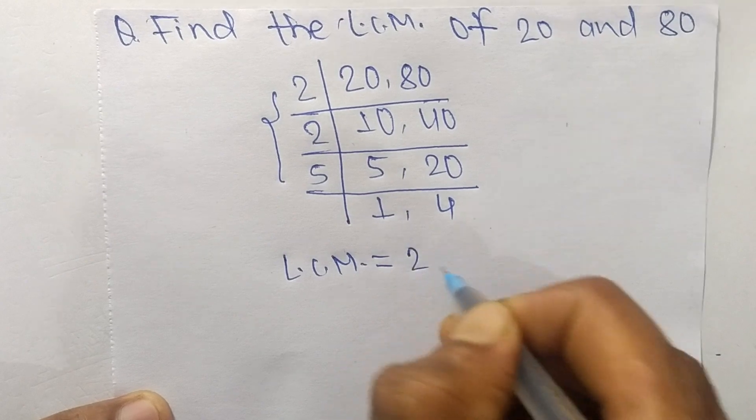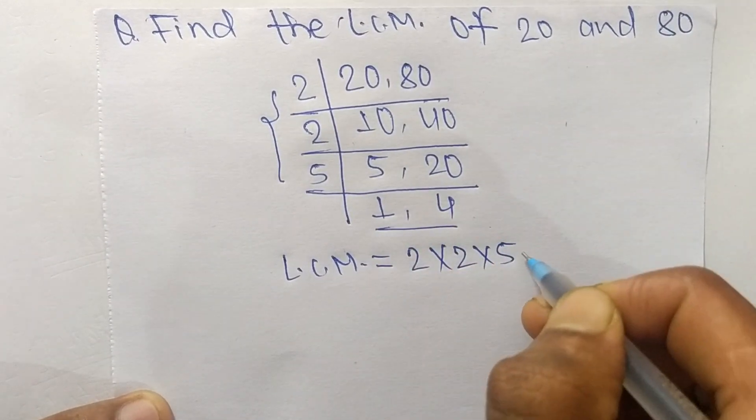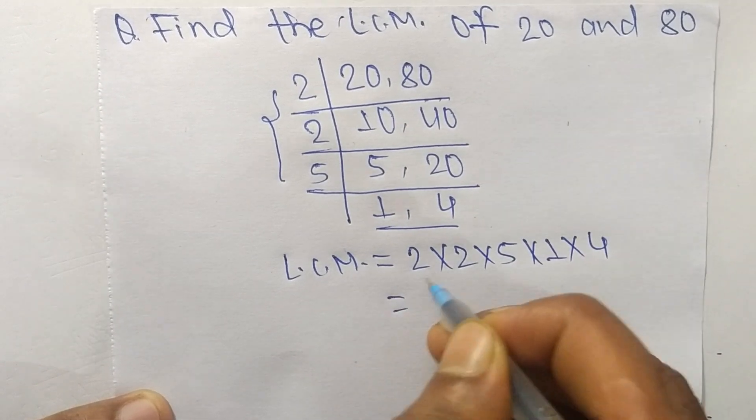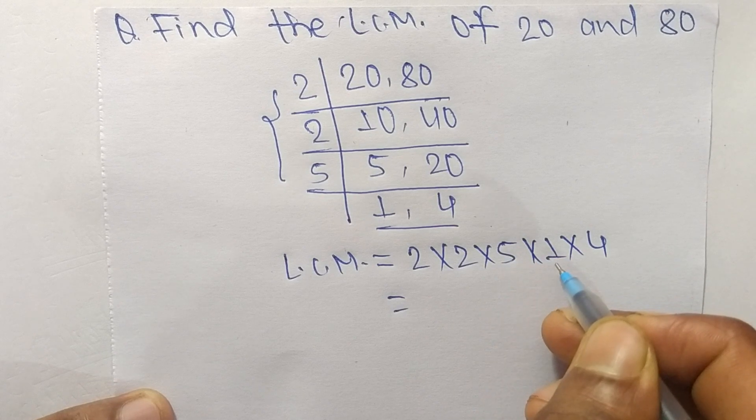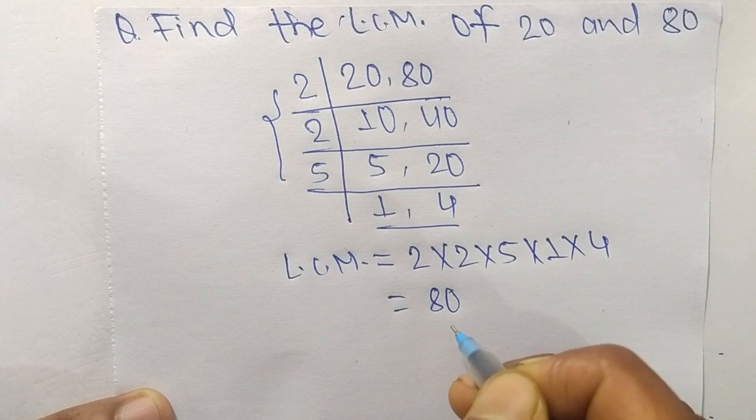2 times 2 equals 4, 4 times 5 equals 20, times 1 equals 20, times 4 equals 80. So 80 is the LCM of 20 and 80.